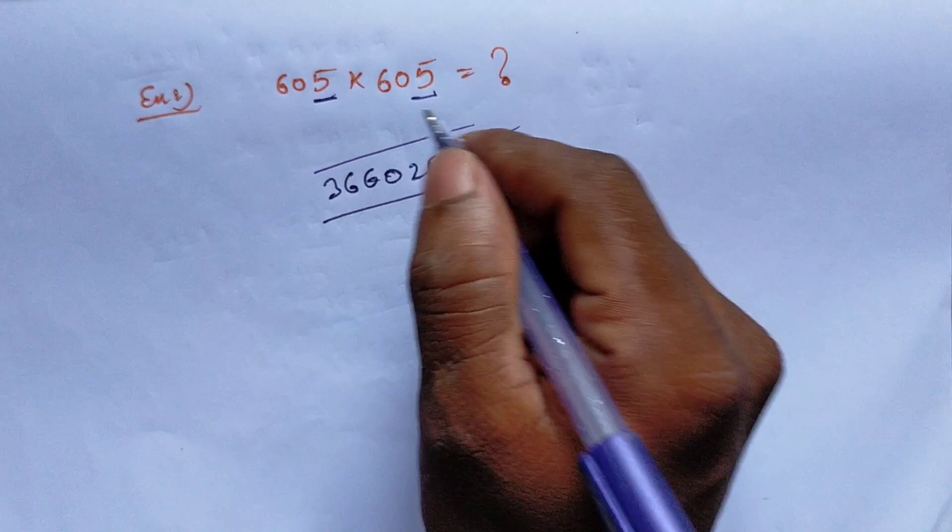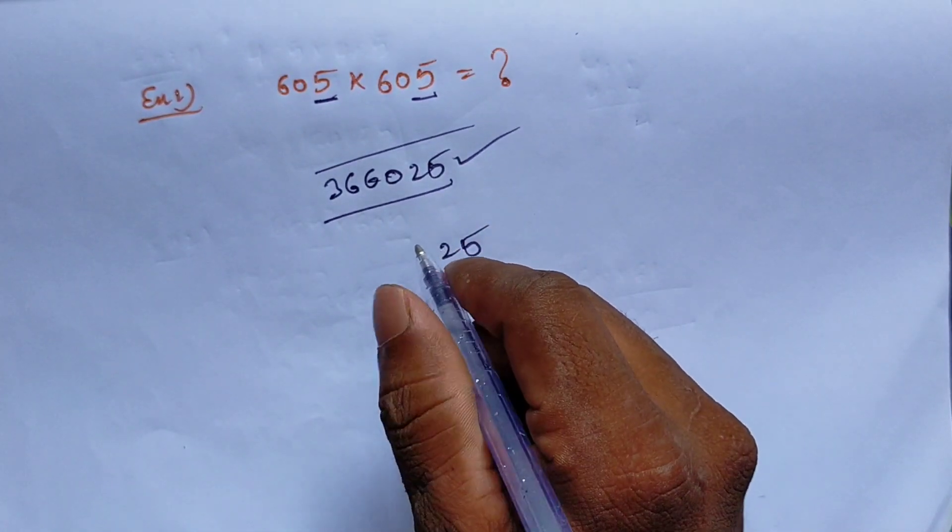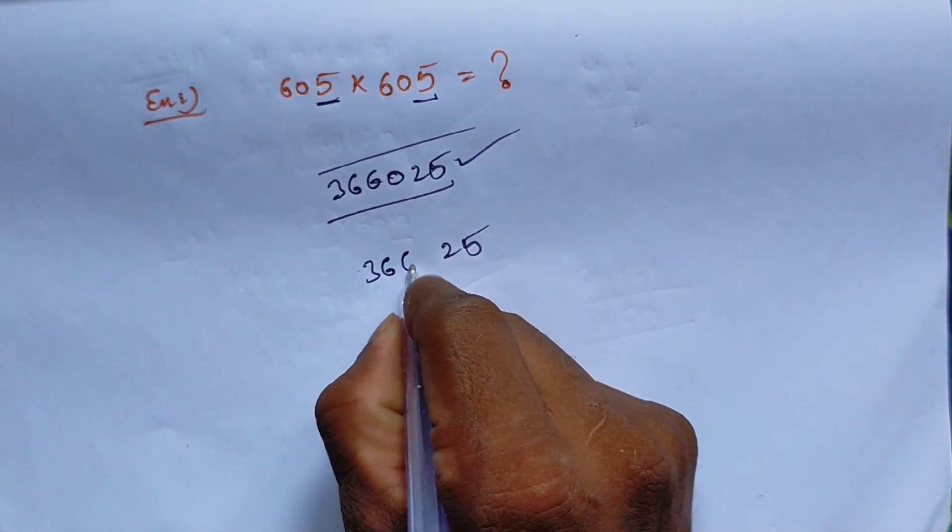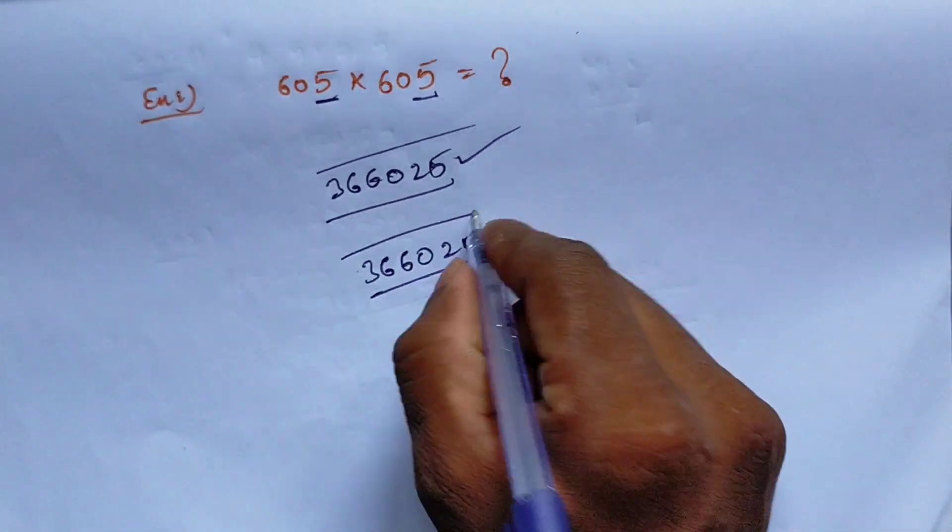It is 60, right? 60 plus 1 is 61. So 60 x 61 is 3660. This is how you get the answer.